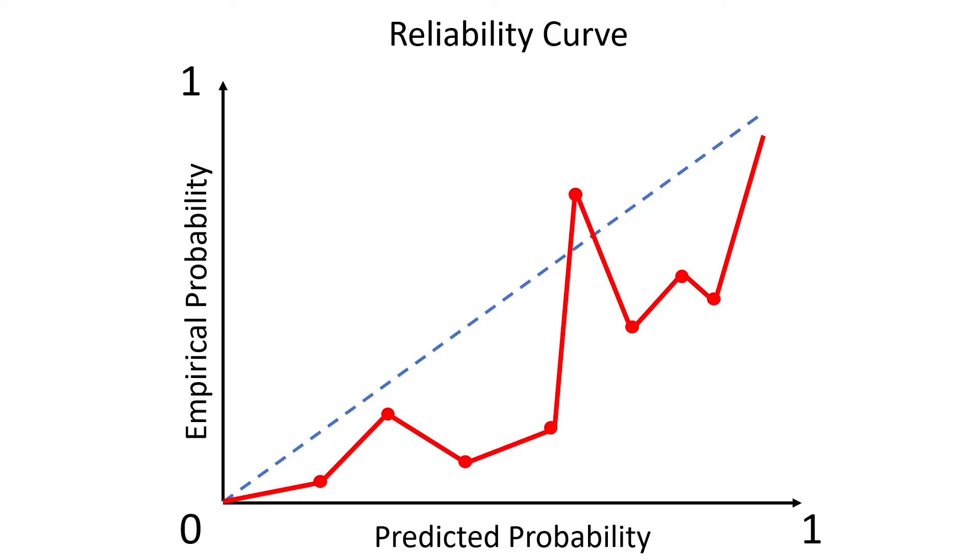Unfortunately, this is rarely the case and when we depict the reliability curve, which is the curve obtained by uniting our calibration estimates, it usually looks more chaotic like in this image.